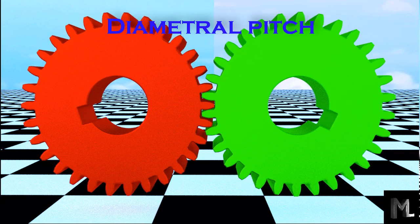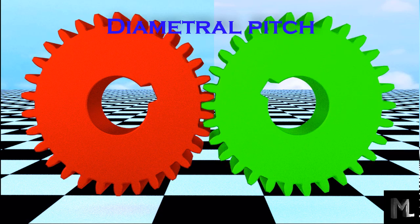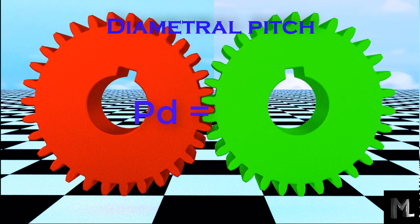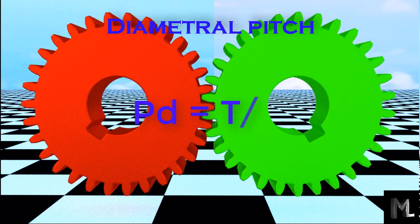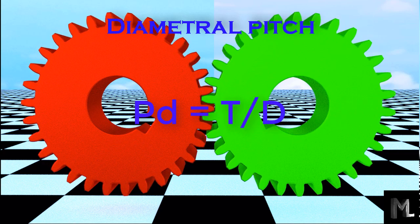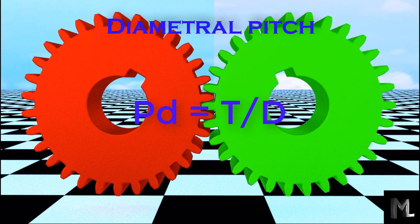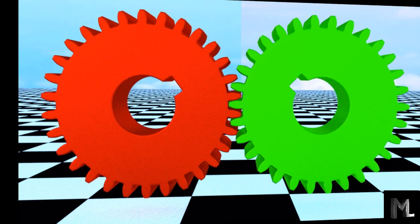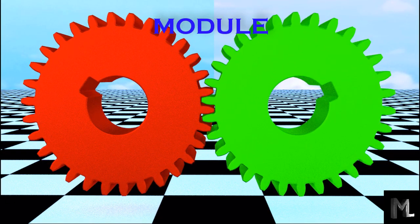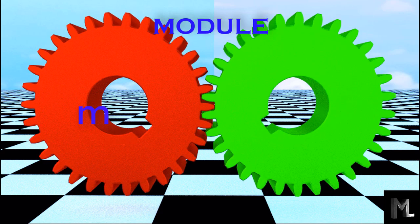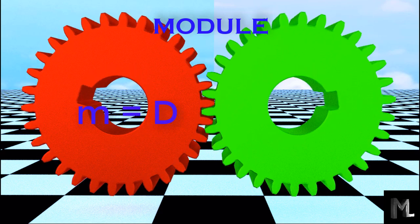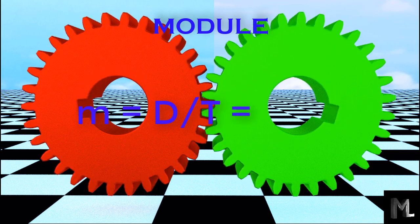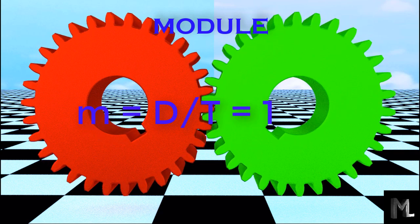Diametral pitch: the ratio between the number of teeth to the pitch circle diameter in millimeters is called the diametral pitch. Module: the ratio of the diameter of the gear to the number of teeth is called the module. It is denoted by m. It is the reciprocal of diametral pitch. Mathematically, module is equal to diameter divided by number of teeth.